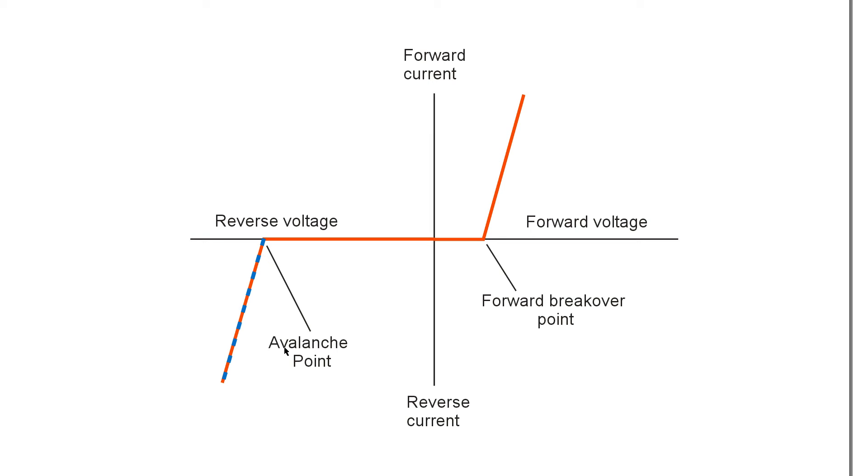Different diodes have different avalanche points, and a specialized diode called the Zener diode is designed to have a specific avalanche voltage or avalanche point. That can be used to advantage in all kinds of circuits, particularly voltage regulators.